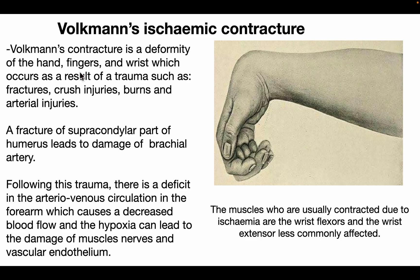Volkmann's ischemic contracture is a deformity of the hand, fingers, and wrist occurring as a result of trauma, fracture, crush injuries, and bone and artery injuries. A supracondylar fracture of the humerus can lead to damage of the brachial artery. The resulting deficit in arteriovenous circulation causes decreased blood flow and hypoxia, leading to damage of muscles, nerves, and vascular endothelium. The wrist flexors are usually contracted due to ischemia; wrist extensors are less commonly affected.